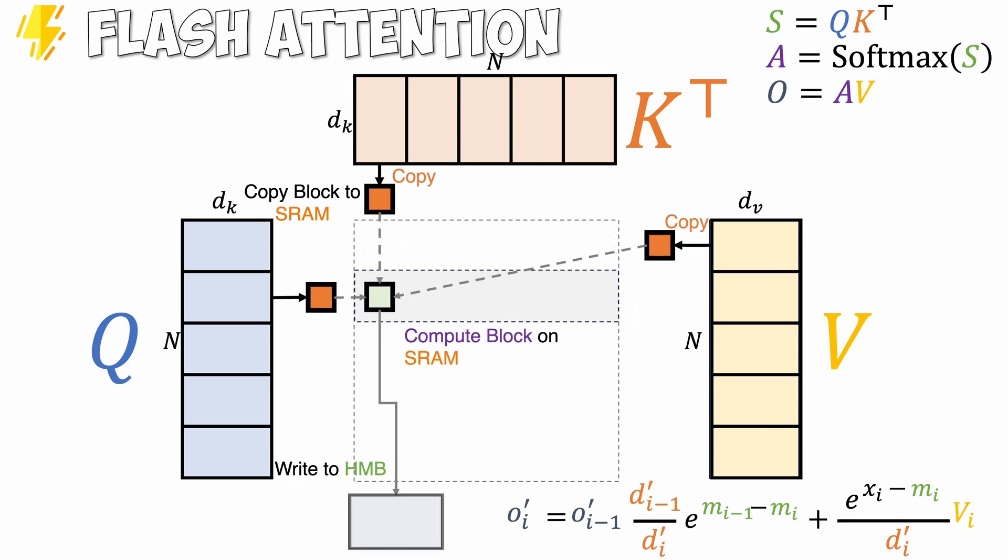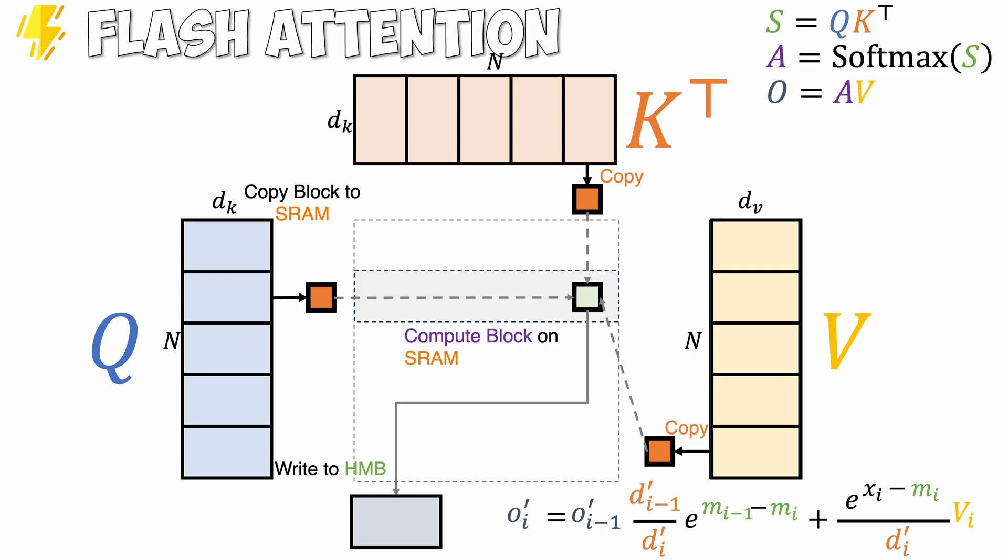Using tiling, we do not materialize the full attention matrix at any time, and this significantly reduces the global memory access. This achieves fast, memory efficient, and exact computation of the attention mechanism. And that's the core of flash attention.